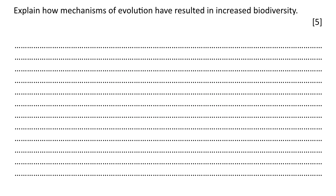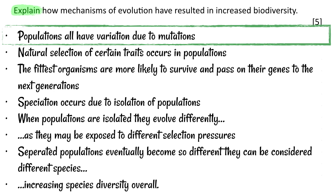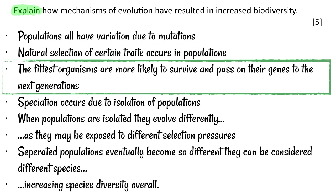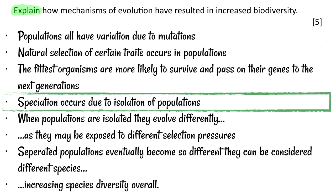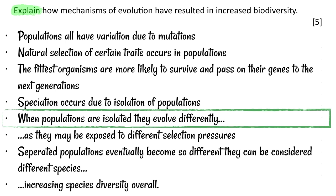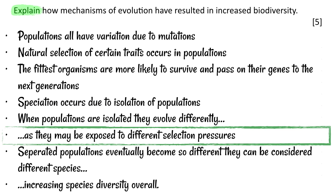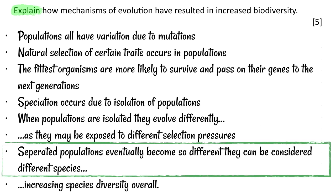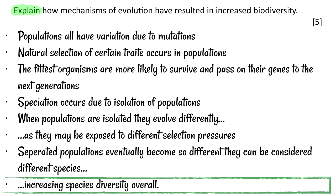Let's think about how you could get tested on this in exams. The question: 'Explain how mechanisms of evolution have resulted in increased biodiversity.' Notice that this is an explain question, so we have to give reasons or causes. Populations all have variation due to mutations. Natural selection of certain traits occurs in populations, and the fittest organisms are more likely to survive and pass on their genes to the next generation. Now we've got to connect this to biodiversity: speciation occurs due to isolation of populations. When populations are isolated, they evolve differently as they may be exposed to different selection pressures. Separated populations eventually become so different that we consider them to be different species, and therefore the diversity has increased overall — specifically referring to species diversity here.